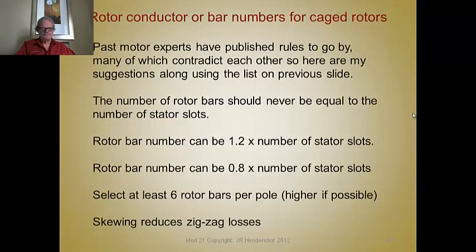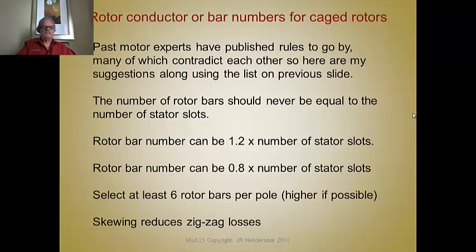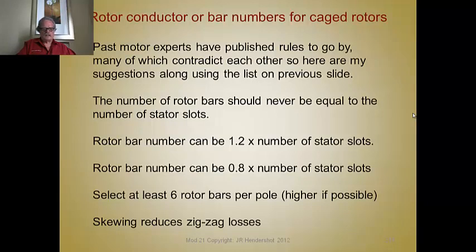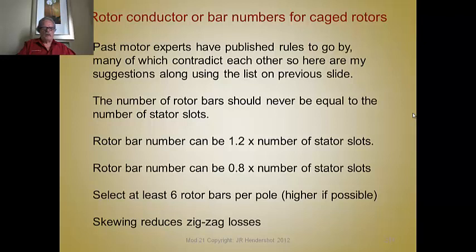We have to select the number of rotor bars — that's important. There are lots of rules and guidelines for that. Most of the critical ones have been for single-phase machines, which can have resonance problems and get stuck and won't start with certain inertia loads. But with three-phase polyphase machines that's not as big a problem. One guideline is that the rotor bar number should be about 1.2 times the number of stator slots, or 0.8 times the number of stator slots — it can never be the same. To adequately establish poles in the rotor that will generate sinusoidal voltages, you need a certain number of bars.